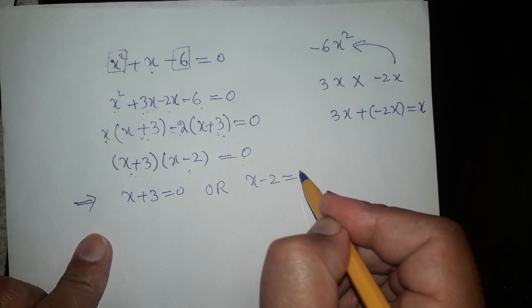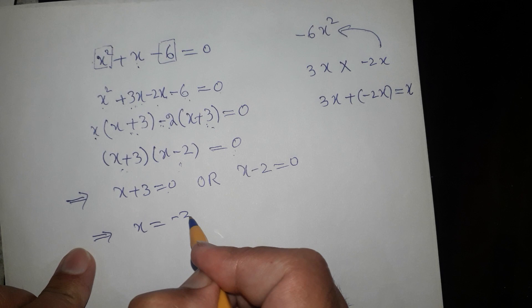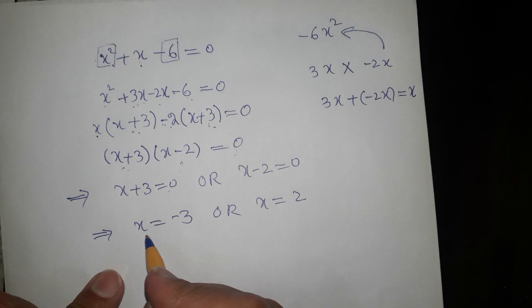Solving each factor: x equals minus 3, and x equals 2. We have two solutions for this quadratic equation. The solution set is {minus 3, 2}.